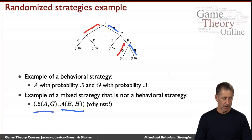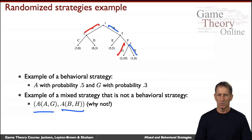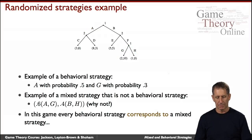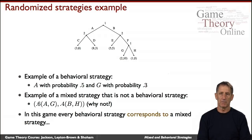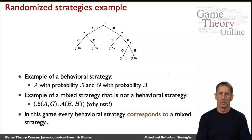Although they are defined quite differently, one looking at the example might think that one could really do the job of the other. And in fact, you'd be correct in this case. In a very famous result — a paper by Kuhn from 1953 — it was shown that in games of perfect information, mixed strategies and behavioral strategies can emulate each other.